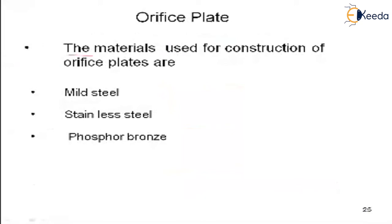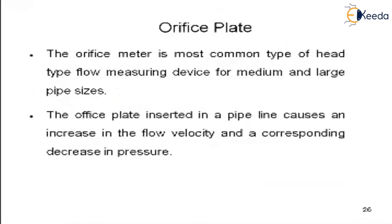The materials used for construction of orifice plates include mild steel, stainless steel, and phosphor bronze — these are metal alloys used in its design. The orifice meter is the most commonly used type of flow measuring device for medium and large pipe sizes.